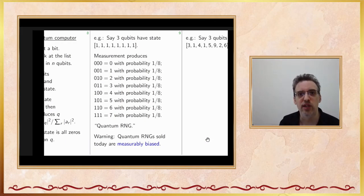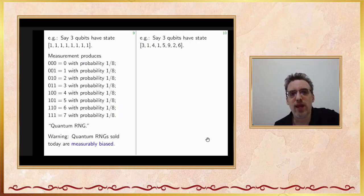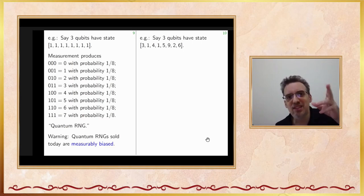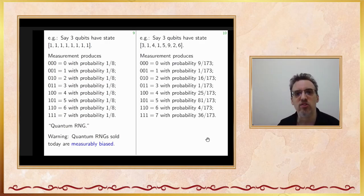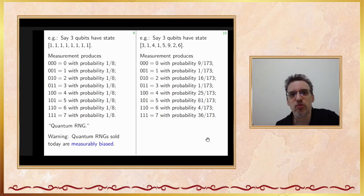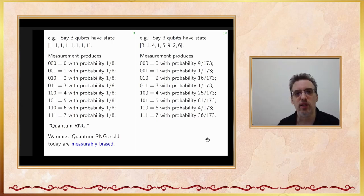Another example: suppose 3 qubits store the values 3, 1, 4, 1, 5, 9, 2, 6. The chance of measuring position 0 is proportional to 3-squared = 9, and position 1 is proportional to 1-squared = 1, so position 0 is 9 times more likely than position 1. Position 2 (amplitude 4) is 16 times as likely as position 1. The exact probabilities are each amplitude squared divided by the sum of all squares. After measuring position 5, the state collapses to a pure 1 at position 5, and any subsequent measurement will deterministically yield 5.